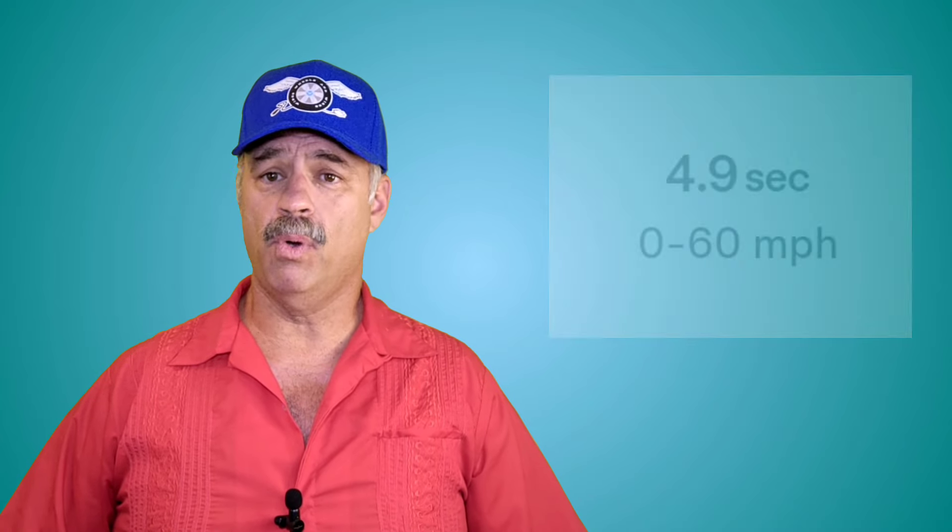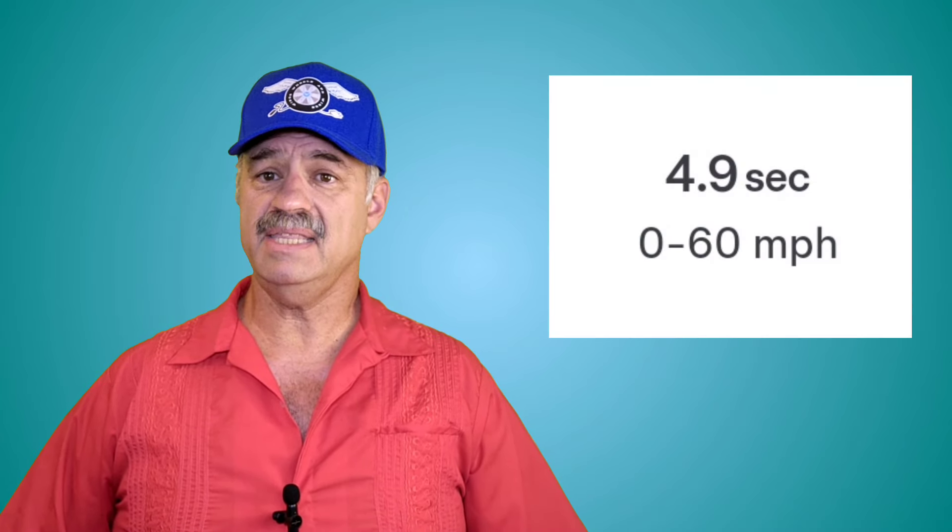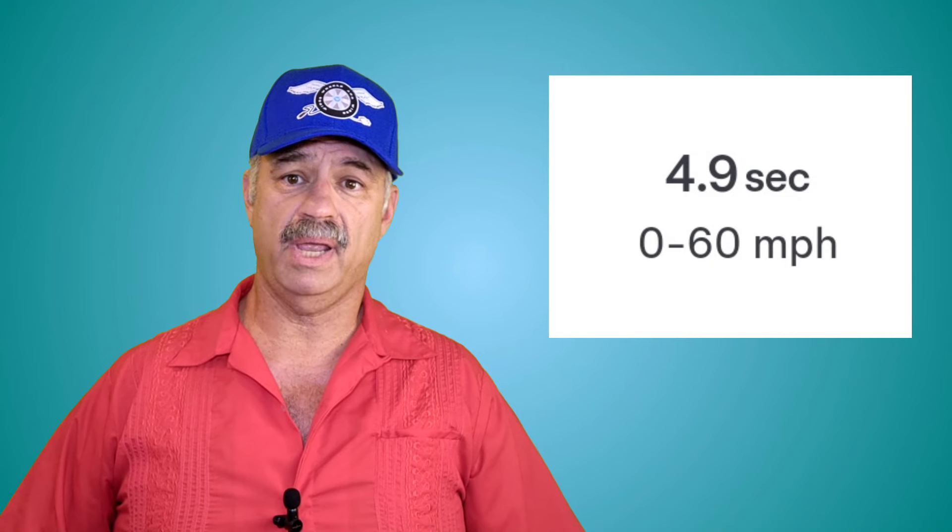It has a 0 to 60 time of 4.9 seconds, making it 0.9 seconds faster than the standard range and only 0.7 seconds slower than the dual motor long range. Now, this is really interesting because with the heavier battery and a single motor, the Long Range Model 3 should be slower than the standard range, but it isn't. So, I haven't been able to find any reporting on the reason for this, but there is only one logical assumption, and that is that this single-drive unit isn't a standard drive unit, but a performance drive unit,